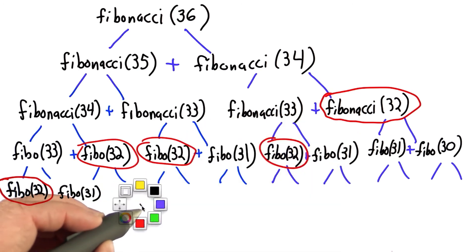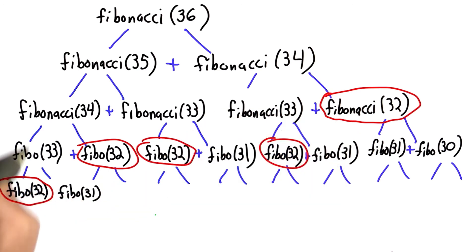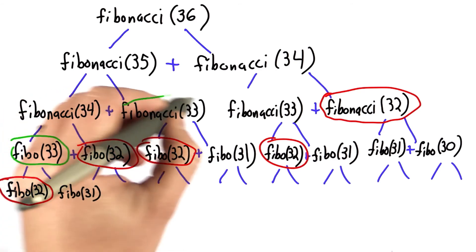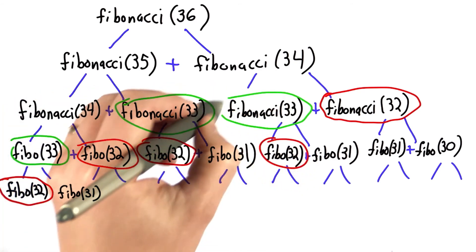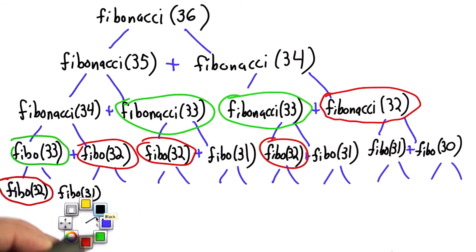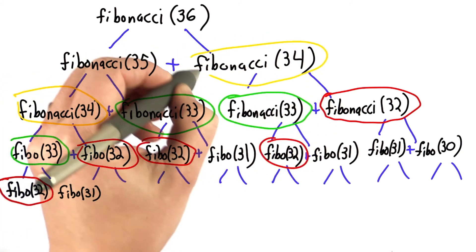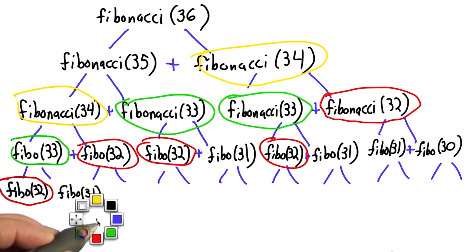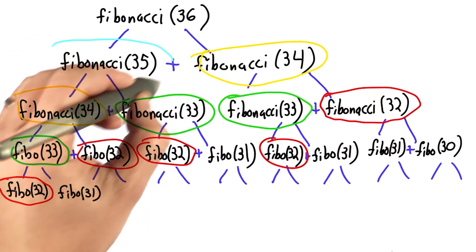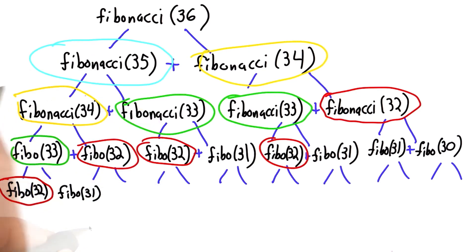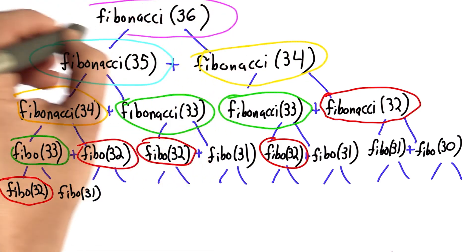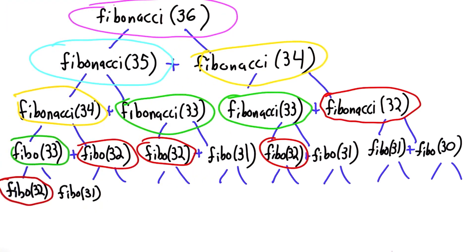The number of times we had to evaluate Fibonacci 33 was 1, 2, 3 times. The number of times we had to evaluate Fibonacci 34 was 2 times. And the number of times we had to evaluate Fibonacci 35 was 1 time. And the number of times we had to evaluate Fibonacci 36 was 1 time. So maybe you can see a pattern here. How many times do you think we're going to need to evaluate Fibonacci 31?